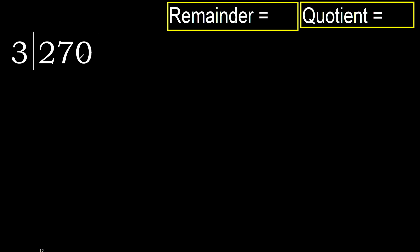270 divided by 3. 2 is less, therefore next. 27 is not less, therefore with 27.